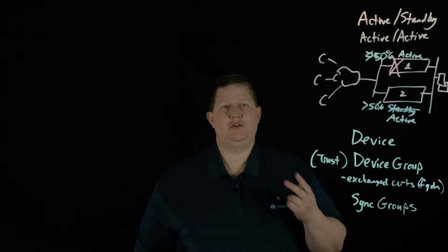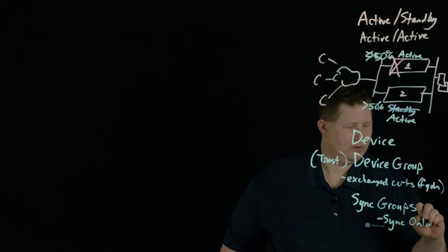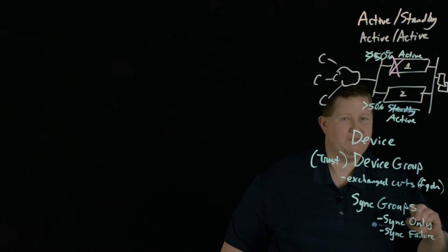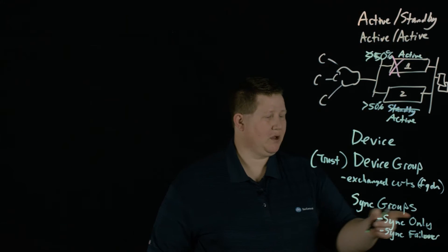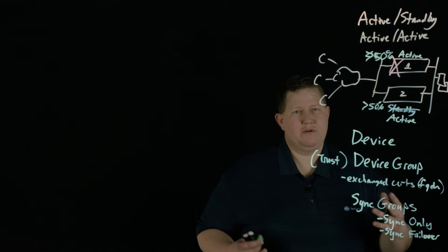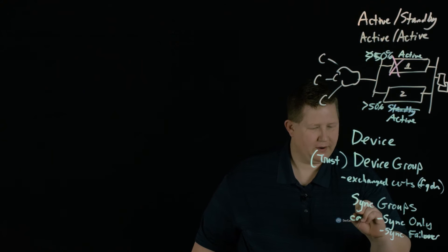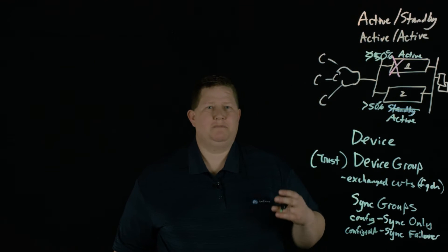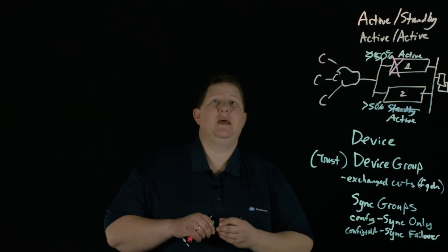In sync groups there are two types: there is a sync-only group and then there's a sync-failover group. Sync-only is just for configuration sync. Sync-failover is where you're actually incorporating HA into that — so sync-only is config, and sync-failover is config plus HA.